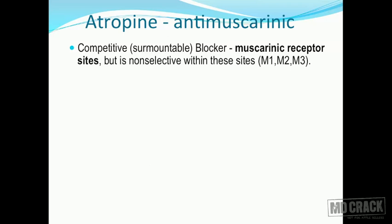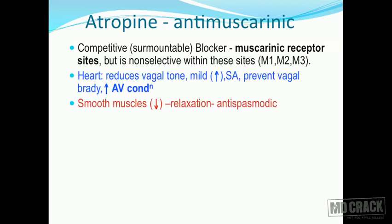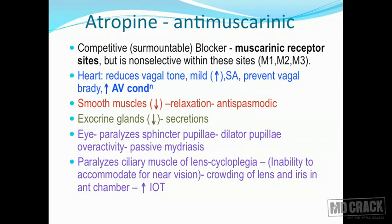Atropine is not selective within the muscarinic receptor subtypes. Muscarinic receptors are further classified into M1, M2, M3, M4, and so on, but atropine does not select between these subtypes — it acts on all muscarinic sites. So in describing the mechanism of action, atropine is non-selective among muscarinic receptor subtypes.